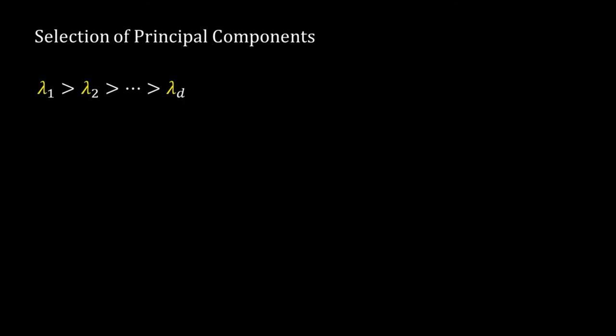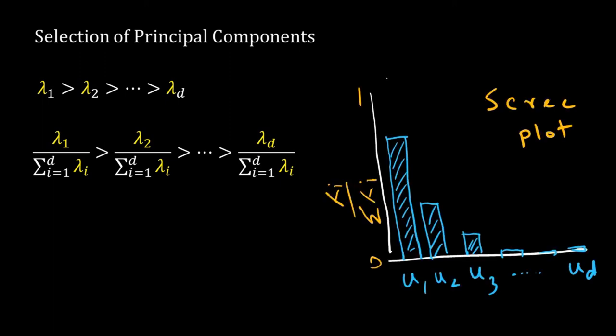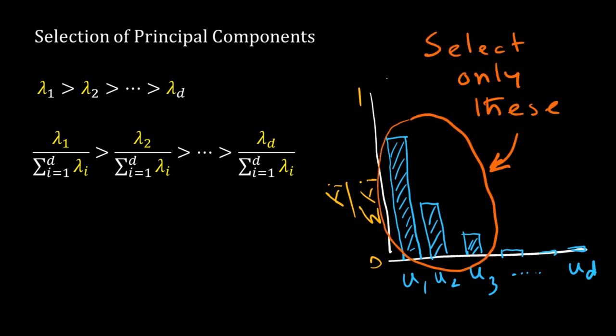We have d variables so there are d eigenvectors, giving all d components. But the purpose of PCA is to reduce the number of dimensions. We do not need all eigenvectors — we choose only those with high variances or high eigenvalues. Sum all eigenvalues of S and divide each by the sum to get relative variance values. This is shown in a typical scree plot. For example, if the first three eigenvectors account for most of the variance, we keep those three and discard the remaining d minus three.